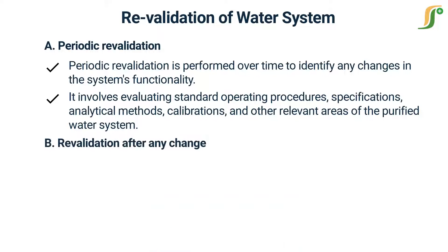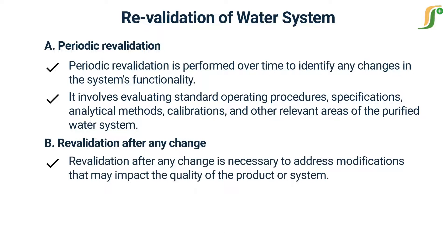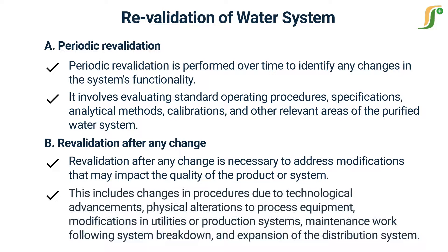Revalidation after any change is necessary to address modifications that may impact the quality of the product or system. This includes changes in procedures due to technological advancements, physical alterations to process equipment, modifications in utilities or production systems, maintenance work following system breakdown, and expansion of the distribution system.